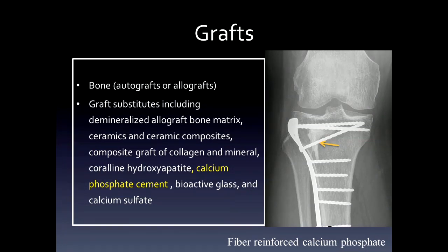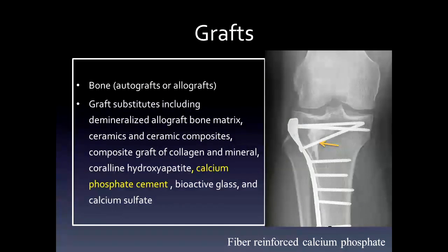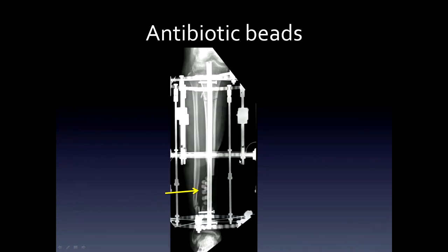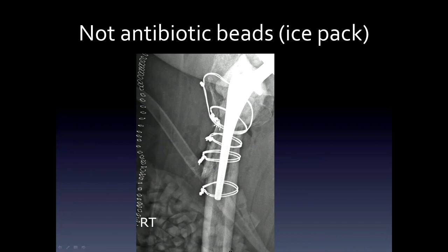A word about areas of increased density seen near fractures: autografts and allografts can be used to augment areas of absent bone. Calcium phosphate cement can produce areas of increased density. In areas of infection, antibiotic-impregnated beads can be used — they are dense, often round, and fill the area of infection, allowing high quantities of antibiotics to go into the local soft tissues. Note that some of these densities may be ice cubes in an ice pack, so don't confuse that appearance.